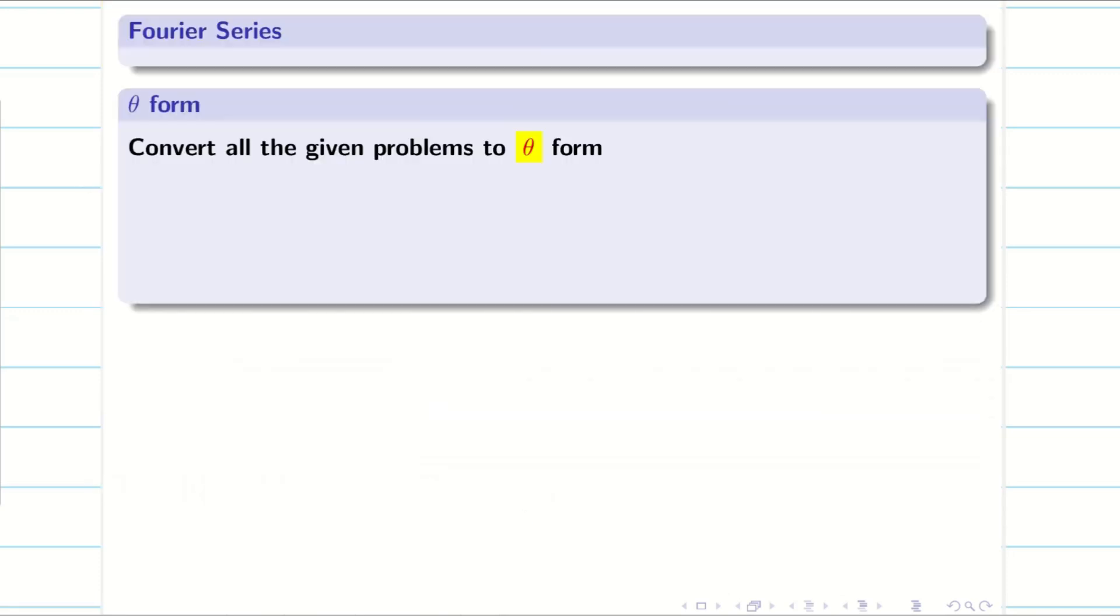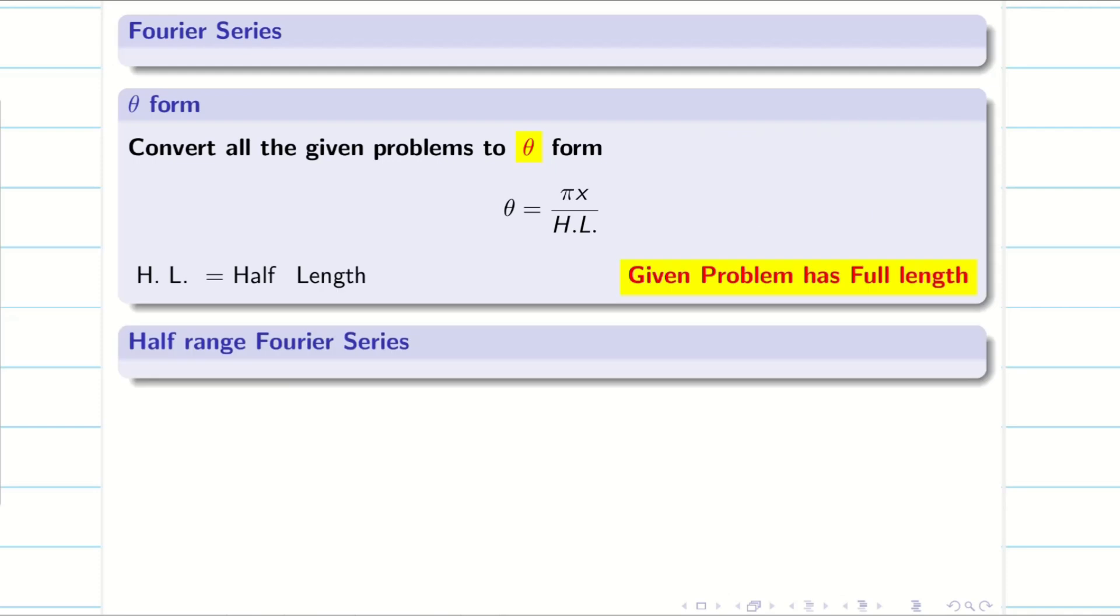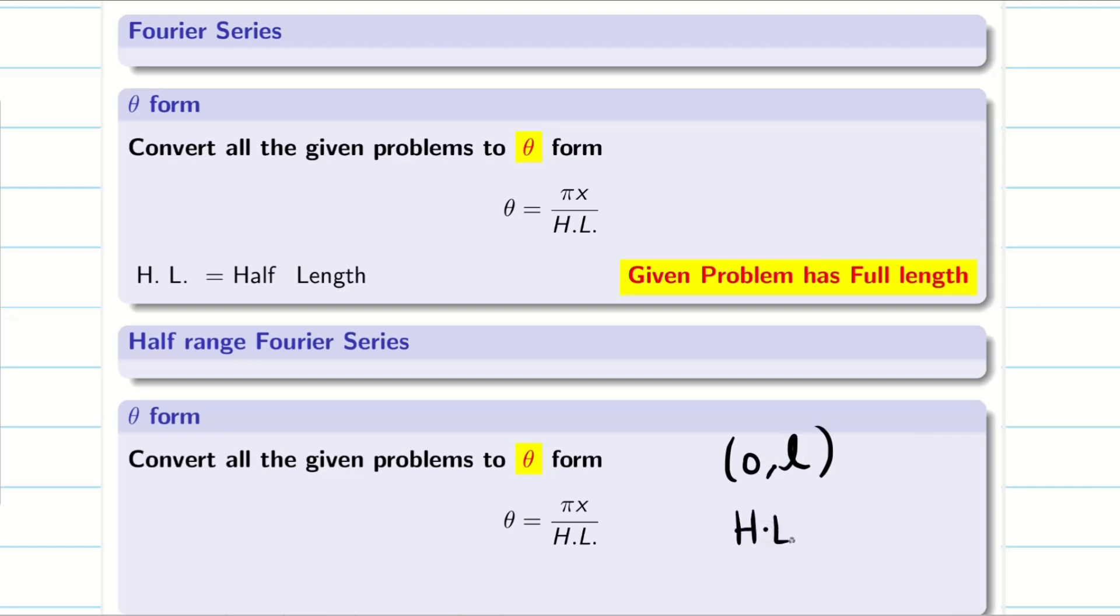Now, I am going to take type 4 and I am going to solve one problem on half-range. So, as I said, whatever the problem, convert into theta form. Theta is pi x by half-length. This is in the case of Fourier series, 0, 2l. So, half-length is l. We have to divide by 2. But in the case of half-range Fourier series, the interval itself, it is given in 0, l. Therefore, my half-length is equal to l is equal to their length.